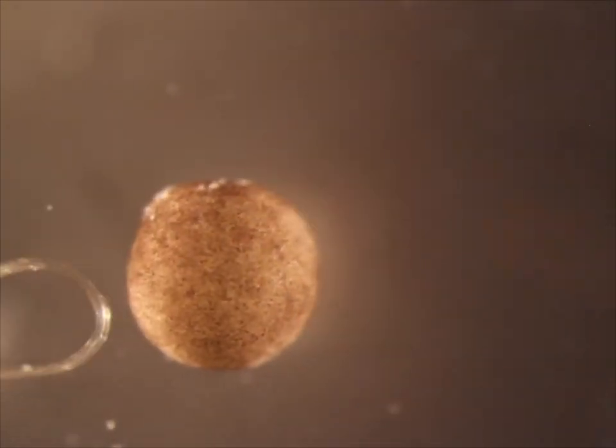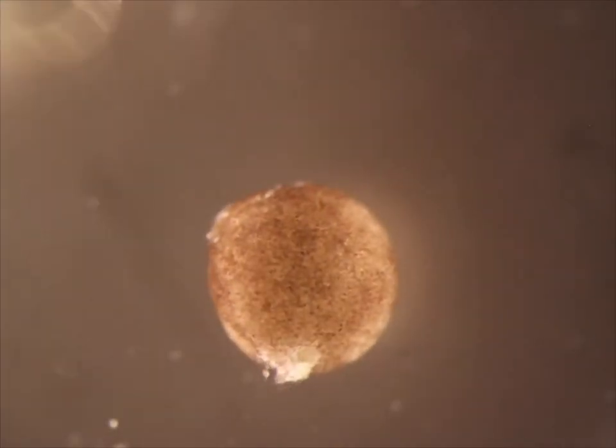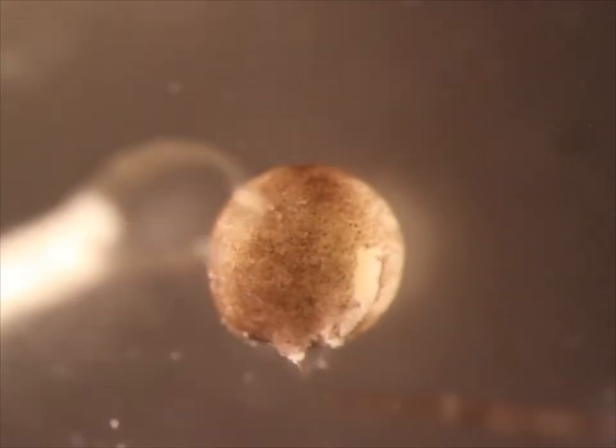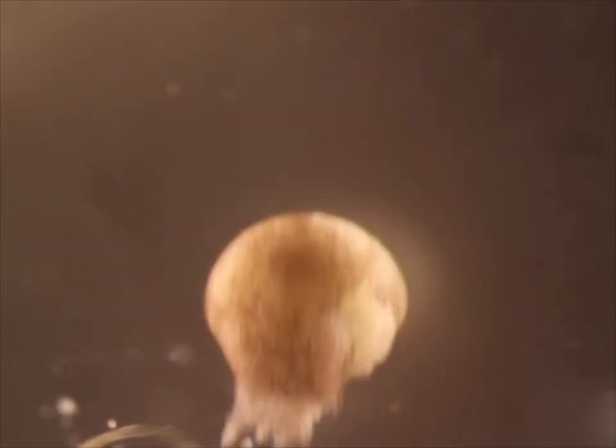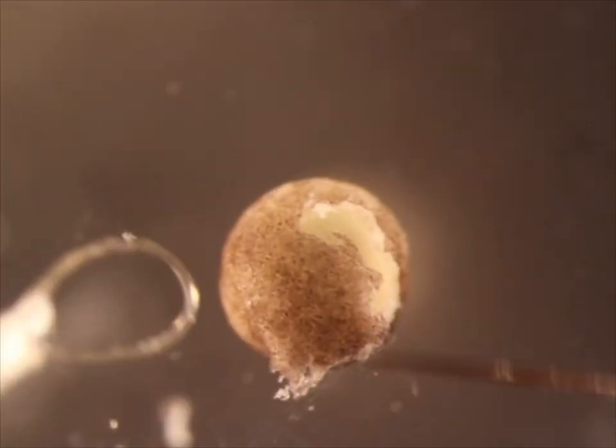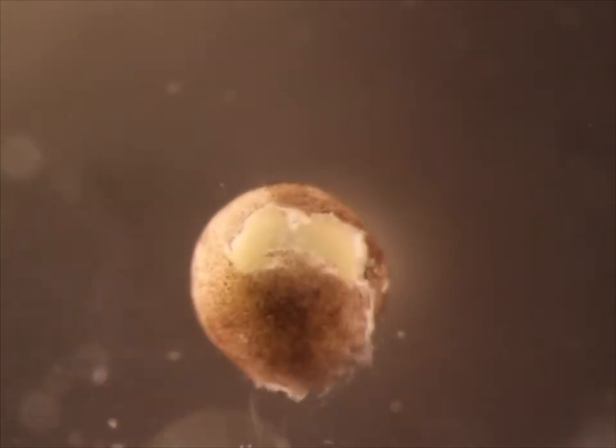Once you have isolated an embryo, you are ready to cut. The hair loop is used to stabilize the embryo while the eyebrow knife cuts the tissue in a motion similar to that of a needle going through fabric. Only small sections should be cut at a time, the motion repeated until the top pigmented portion has been separated from the rest of the embryo.